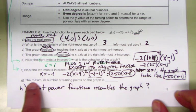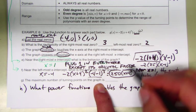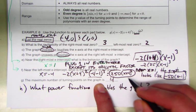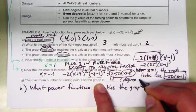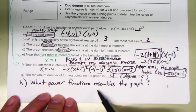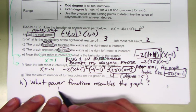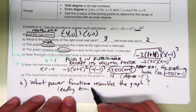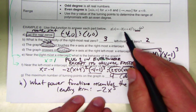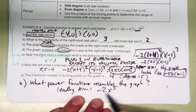The maximum number of turning points: the degree is five, so the maximum number of turning points is four. For the last question — what power function resembles the whole graph — we get the big picture from the leading term. The leading term is negative 2x to the fifth, because x squared times x cubed is x to the fifth, and there's a negative two in front. So this is what the graph is going to look like overall.